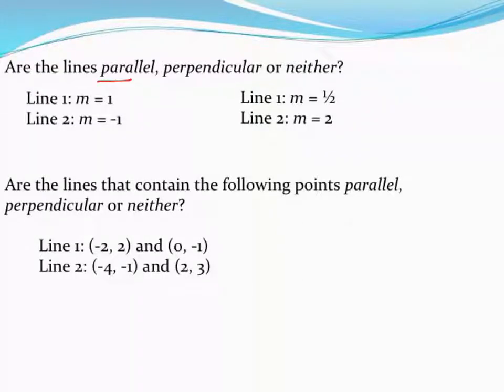To figure out if two lines are parallel or perpendicular, we have to compare their slopes. Parallel lines will always have slopes that are the same number. They're the same steepness, they never intersect, so they're parallel. And there's your symbol for parallel if you don't want to write it down each time.